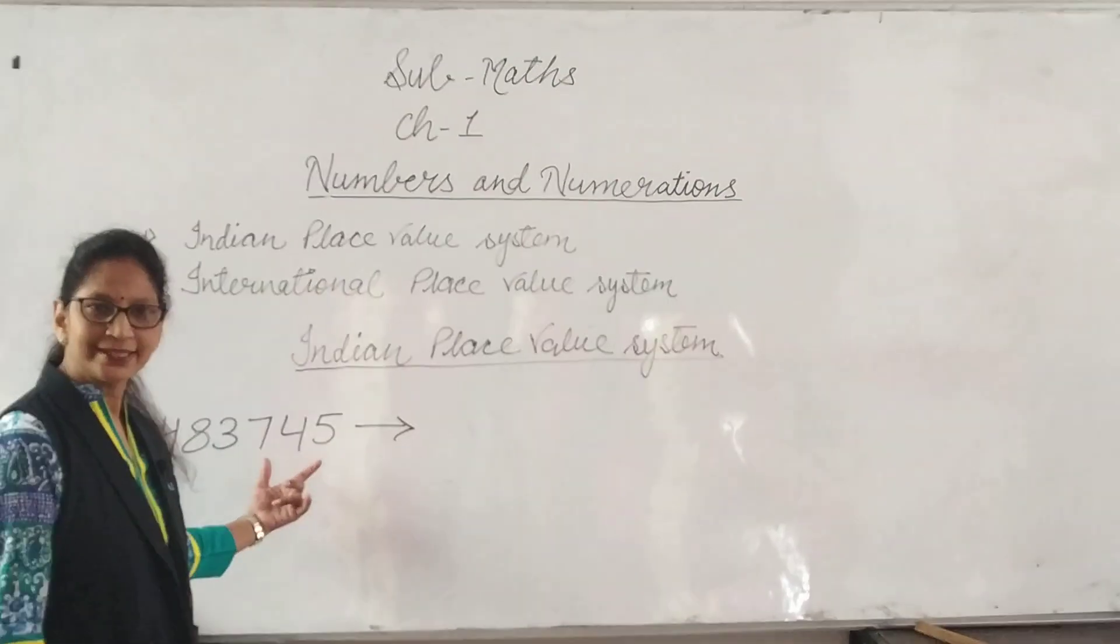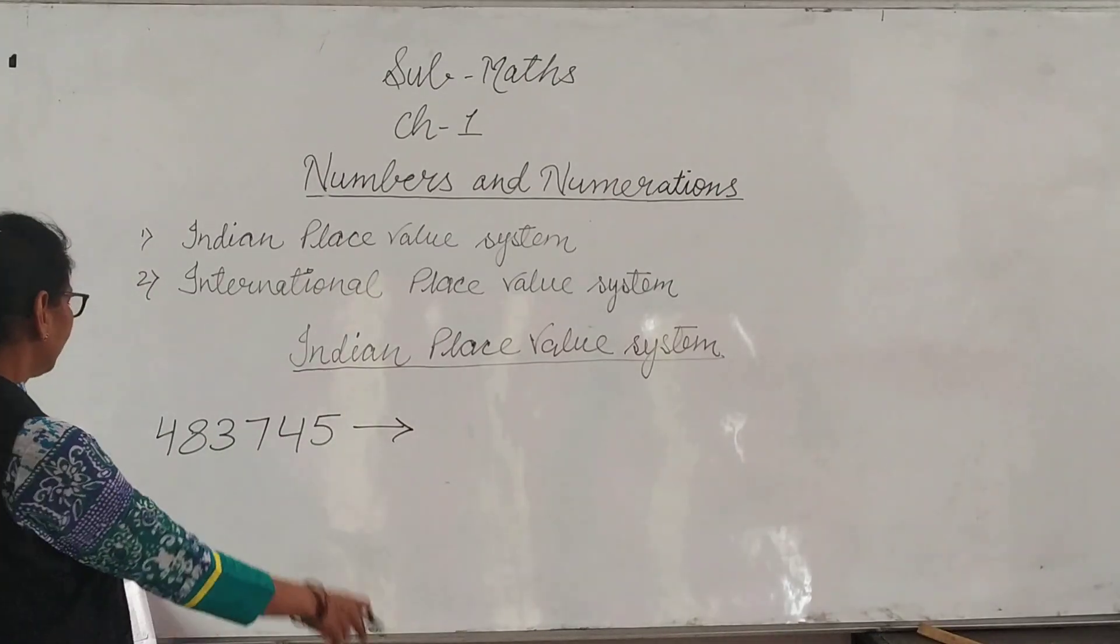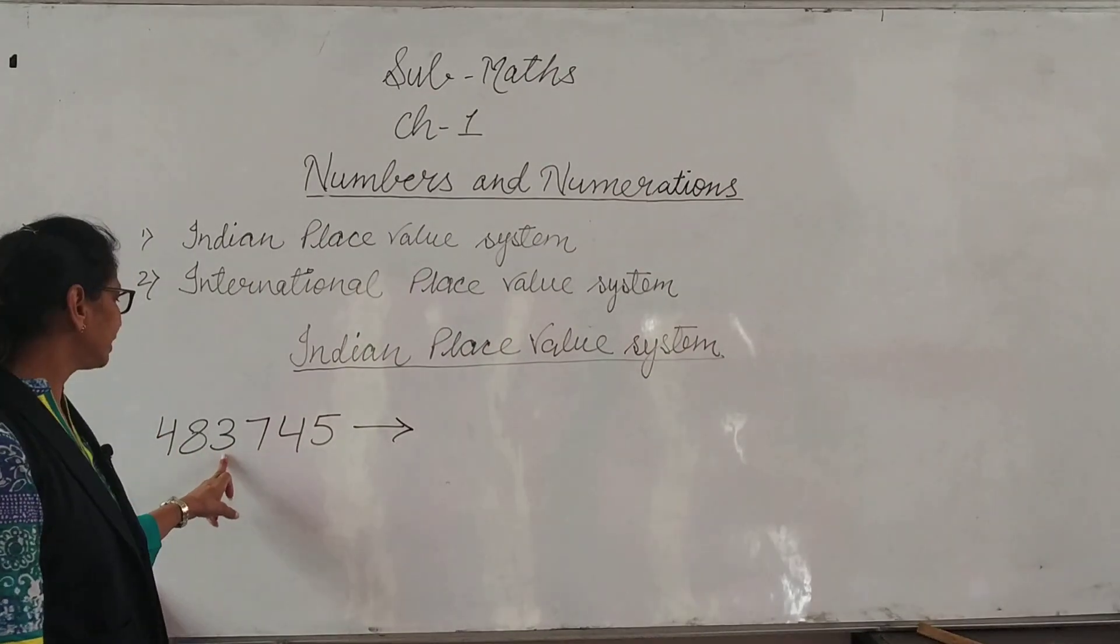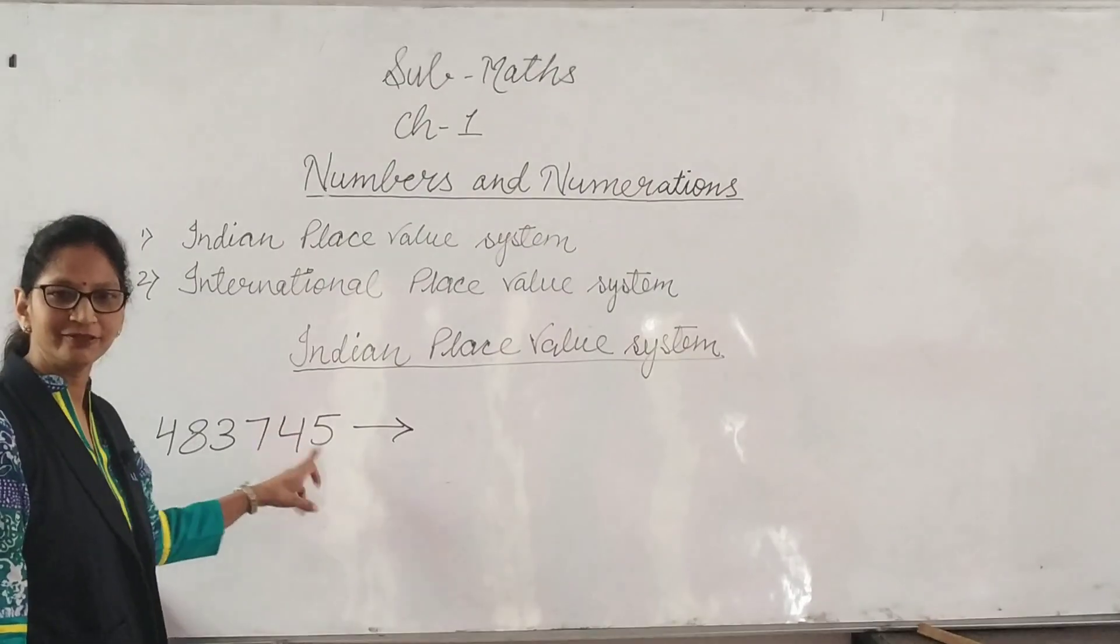Now, let's see an example. We have six digit numbers: 4, 8, 3, 7, 4 and 5.